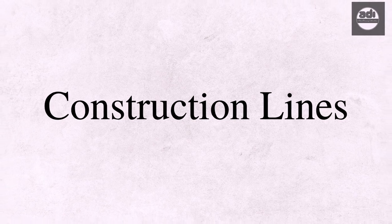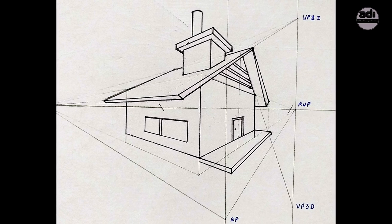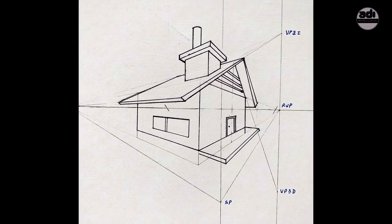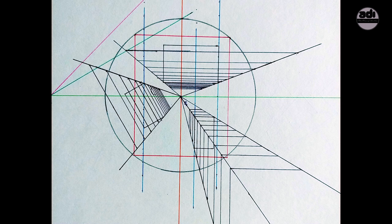Construction lines are temporary lines that can be used as references when creating and positioning other objects or lines in a drawing. It is like scaffolding and is usually not a part of the final drawing.